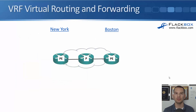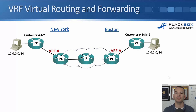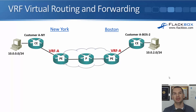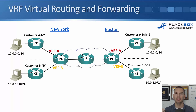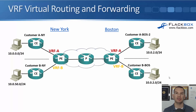VRFs are most commonly used for MPLS Layer 3 VPNs. In our service provider network with PE routers in New York and Boston, we provision a Layer 3 VPN for customer A, assign those connected interfaces to VRF customer A, and routes received there are sent to the customer A router on the other side. Customer B is connected into the same physical routers, with interfaces assigned to VRF customer B. Separate VRFs keep the two customers' routing tables completely isolated, preventing any route mingling — which would be a security issue.